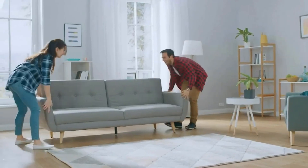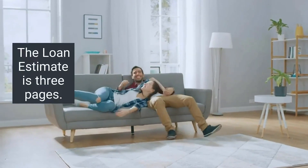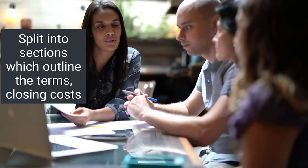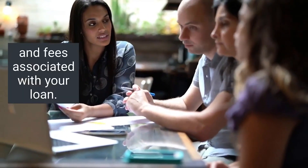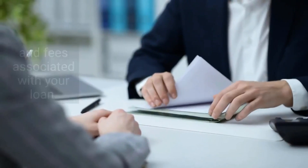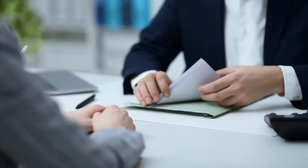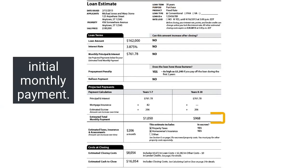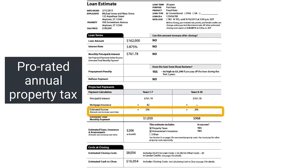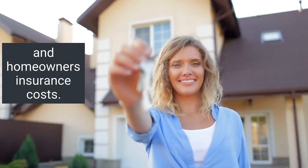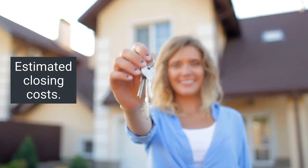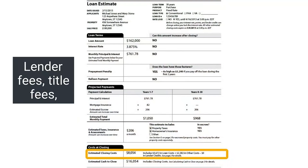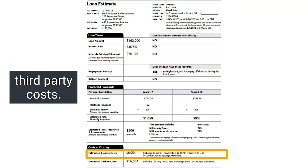The loan estimate is three pages long and is split into sections which outline the terms, closing costs, and fees associated with your loan. Some of the items you'll find listed include a summary of your loan details — your loan amount, the term of your loan, and your initial monthly payment — your escrow account information, including your prorated annual property tax and homeowner's insurance costs, and your estimated loan closing costs, including lender fees, title fees, and any applicable third-party costs.